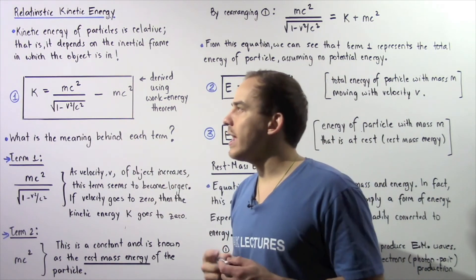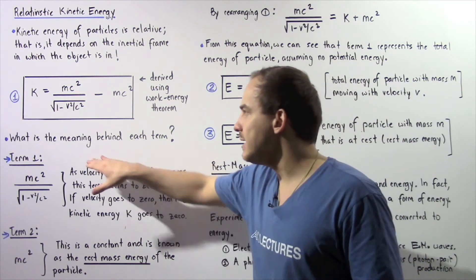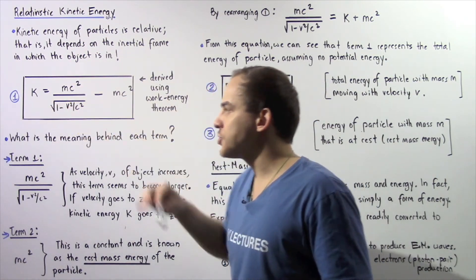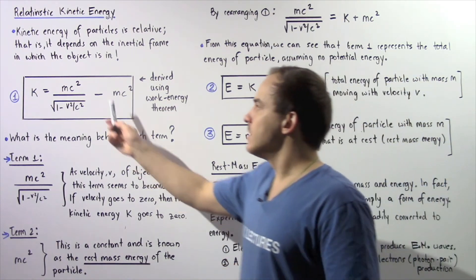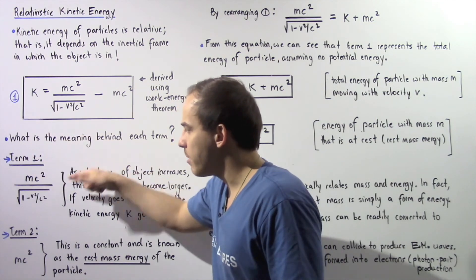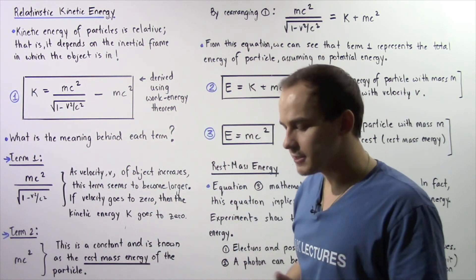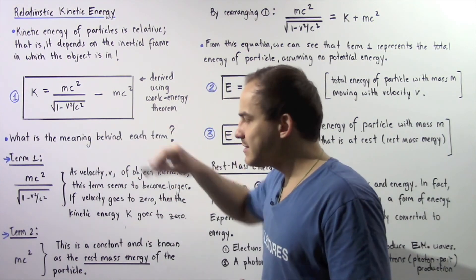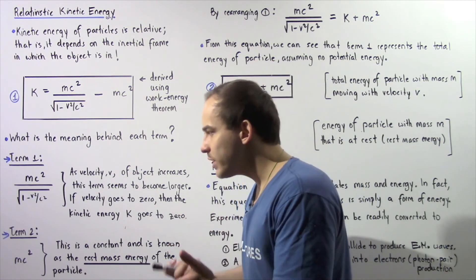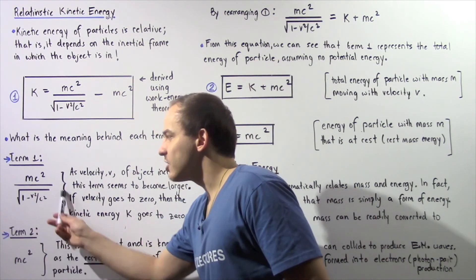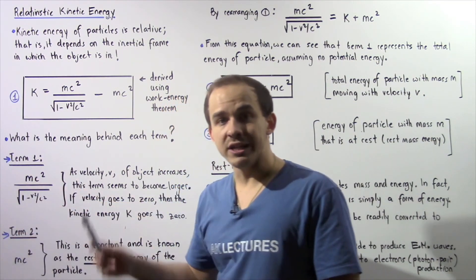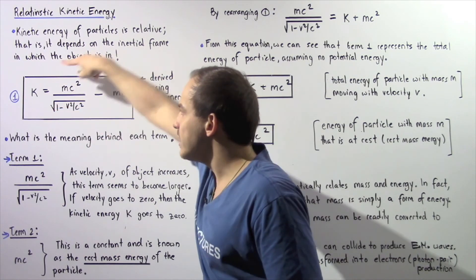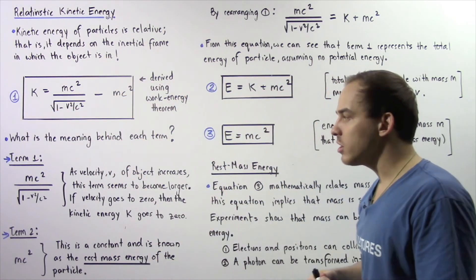Let's examine this equation in more detail and find the meaning behind each of the two terms. Starting with term number 1: mc squared divided by the square root of 1 minus v squared over c squared. As the velocity v of the particle increases, the denominator decreases, so the entire fraction increases. As velocity increases, this fraction increases, and therefore the kinetic energy of the particle also increases.